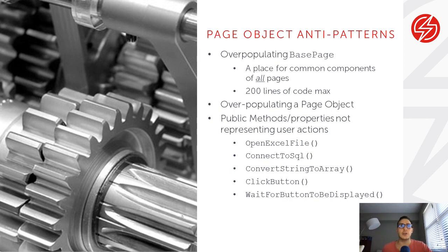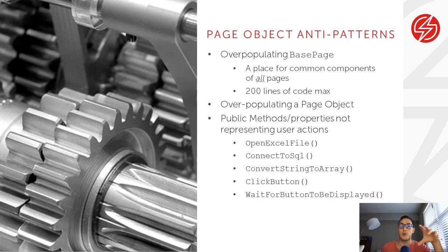Also, keep your base page objects to 200 lines of code maximum. We found that this works really well as a simple rule of thumb — it will make sure that your page objects, not only the base page but all your classes, will be more maintainable, follow the single responsibility principle, and be more readable. Rather than thinking about all the possible patterns you can apply to a class, just remember 200 lines of code max. Some things that belong in a base page that all pages use are: the driver, maybe the JavaScript executor, and maybe the WebDriverWait class that allows you to synchronize all of the elements.